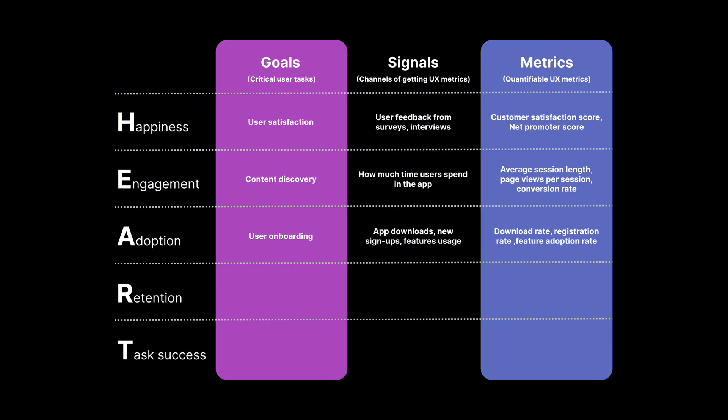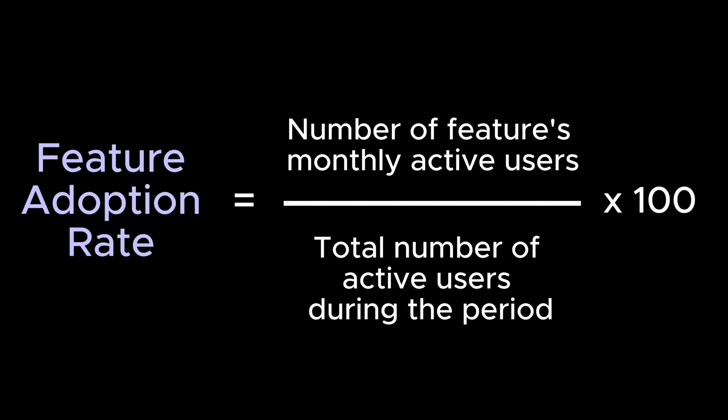Adoption tracks how many new users start using the app or a new feature. Goal: onboard new users and ensure they understand the app or feature's value. Signals: app downloads, sign-ins for accounts, and use of new features. Metrics: Download Rate, Registration Rate, and Feature Adoption Rate. The Feature Adoption Rate is calculated by dividing the number of the feature's monthly active users by the total number of users during the period. Ideally you want 100% if it's a core feature.